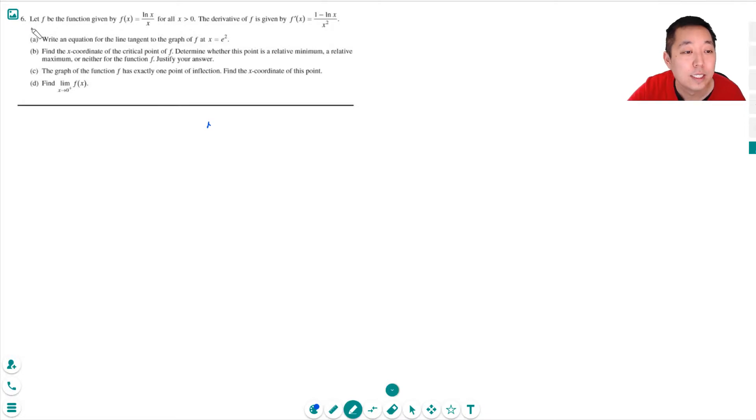So let's take a look. Let f be the function given by f of x equals ln x over x for all x greater than zero. The derivative of f is given by this. So they computed the derivative for you even though you should be able to do this yourself.